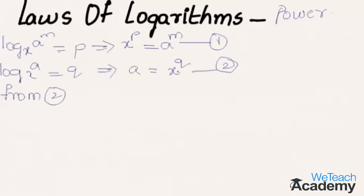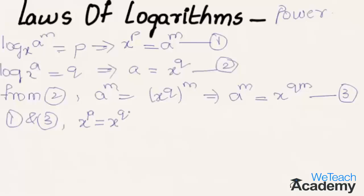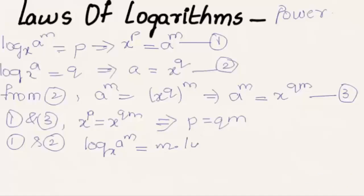From equation 2, let us substitute the value of a into equation 1. That gives a to the power m equals x to the power q, whole raised to the power m, which simplifies to a^m equals x to the power qm — equation 3. Comparing equations 1 and 3, we get x power p equals x power qm, and since the bases are equal, p equals qm. Using the values of p from equation 1 and q from equation 2, we get log a^m to the base x equals m times log a to the base x. This is the law of logarithm of a power.